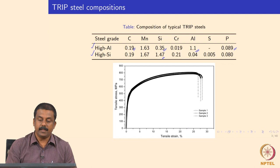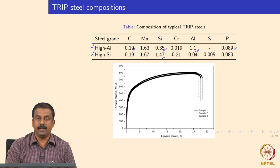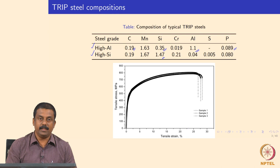In silicon-based TRIP steels, we replace aluminum with silicon, generally added at around 1.5 to 1.8%, with carbon and manganese remaining the same. Silicon-based TRIP steels were conventionally developed first, and commercialization also started with silicon-based TRIP steels. However, there were issues with silicon addition because silicon forms surface oxides, causing problems with galvanizability — silicon oxide formation on the surface severely affected the adherence of zinc coating.